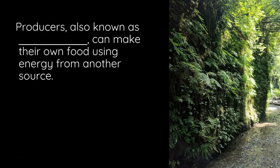One of those ways is by making your own food. Producers, also known as autotrophs, can make their own food using energy from another source, like the sun. You see the sun in the picture — those ferns are taking that sun, they're taking the water, they're taking the carbon dioxide, and they're going to make their own sugars.